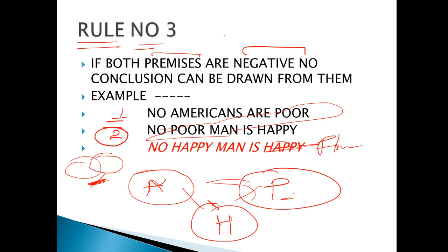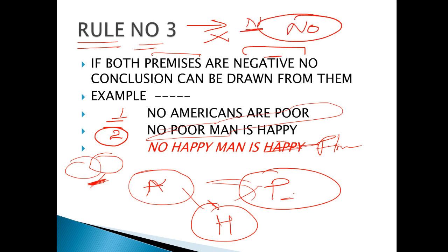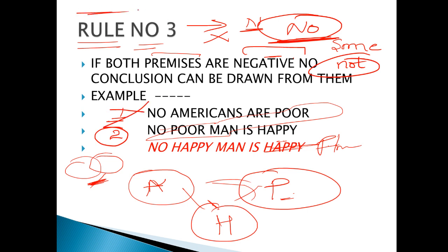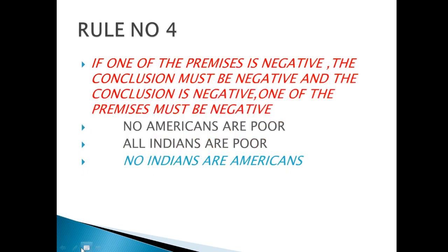तो third rule आपको याद करना है: अगर आपके दोनों premises negative हैं — मतलब उनके बीच में कहीं 'no' आ गया है — 'some not' भी हो सकता है, जरूरी नहीं कि अकेला 'no' ही हो। 'Some not' में भी 'not' आता है — तो उसका conclusion draw ही नहीं हो सकता। अब चलते हैं next rule पर।